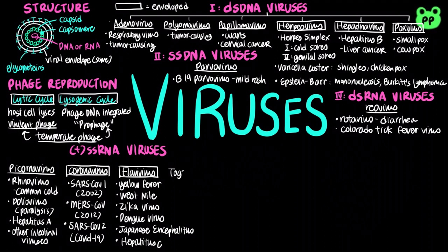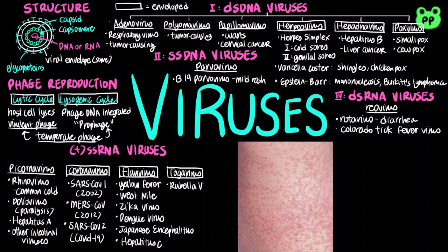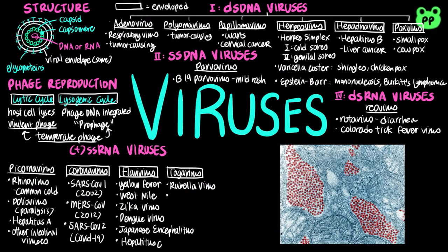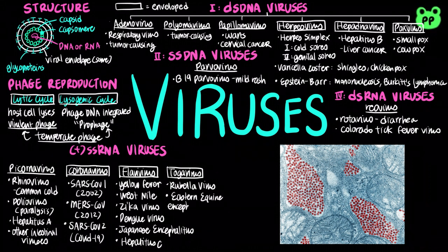Togaviruses are a group of enveloped viruses that include rubella virus, which causes rubella, or German measles, as well as eastern equine encephalitis, which originated from horses and is transmitted by mosquitoes.